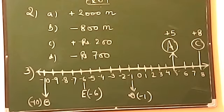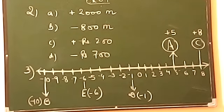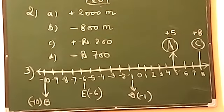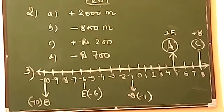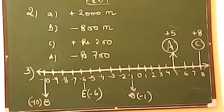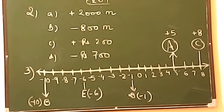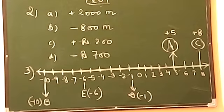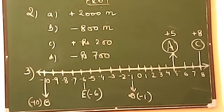Question number 6 asks which number is to the right on the number line. Out of 2 and 9, nine is greater so nine is on the right. Minus 3 and minus 8: minus 3 is greater, so minus 3 is on the right. Zero and minus 1: zero is greater. Minus 11 and 10: ten is greater. Minus 6 and plus 6: plus 6 is greater. And 1 and minus 100: 1 is on the right.